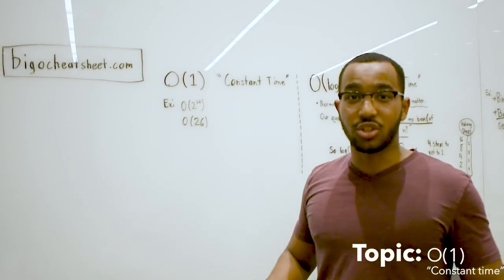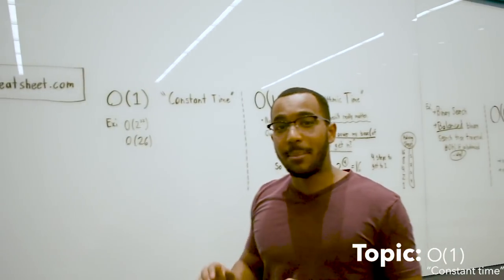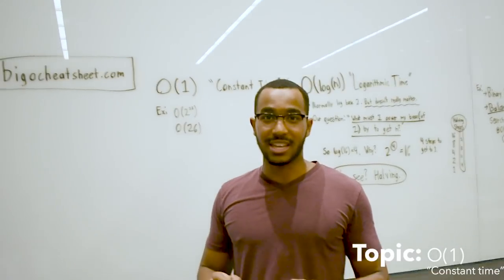It could be O of 26, it could be O of 2 to the 32, as long as it's constant. As long as it's a constant line, that means it's constant time. It doesn't matter how large that constant is.